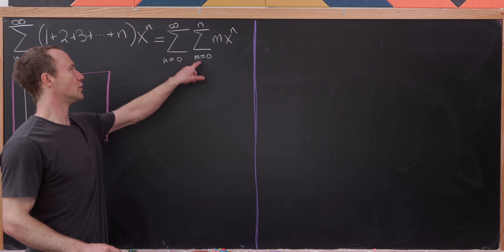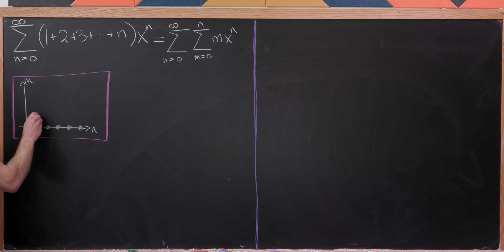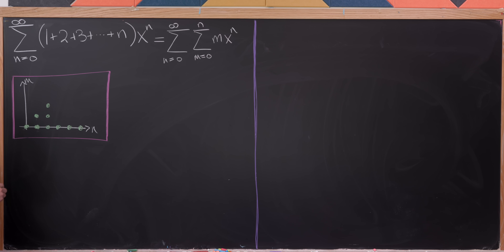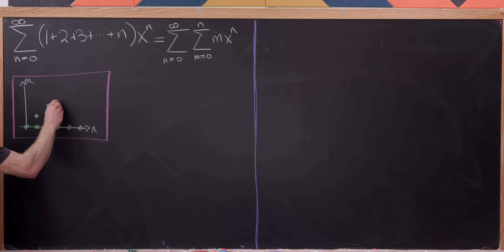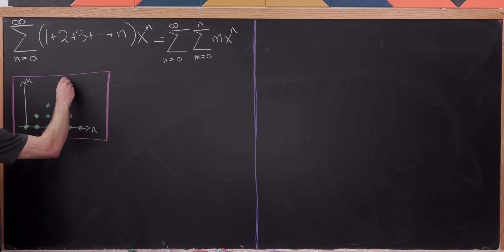m is going from zero to n. So if n equals zero, the largest m can be is also zero. If n equals one, m can be zero or one. If n equals two, m can be zero, one, or two. If n equals three, m can be zero, one, two, or three. We get this triangular shape.